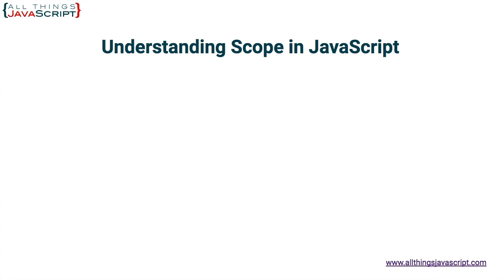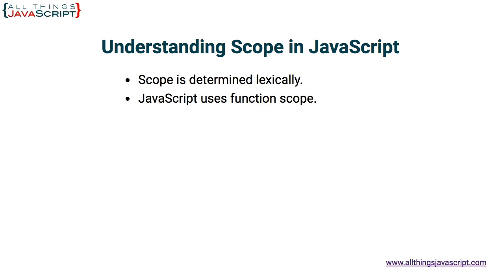Let's now take a look at a few concepts that are associated with scope. Number one is scope is determined lexically. What does that mean? Well, that simply means that when you're writing your program, where you place the declaration of variables and functions determines scope. So it has nothing to do with when a function is called or when your code is executed. Scope is determined by how you write your program.